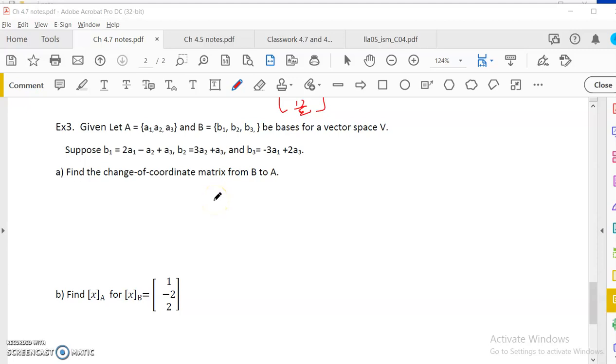So the last example that I'm going to do in 4.7 is given two bases. I want to find the change of base coordinate matrix from one of them to the other from B to A when actually I know how each of the bases in B can be written in A. And then also I want to change if I have a vector that's written in terms of the bases in B, I want to write the coordinate vector for A.